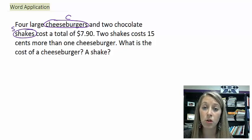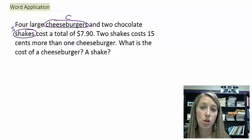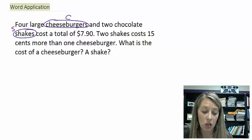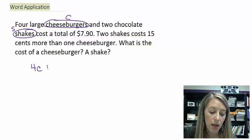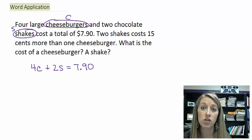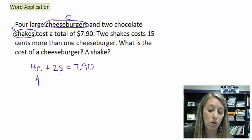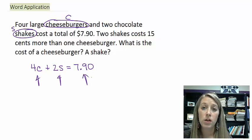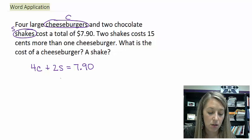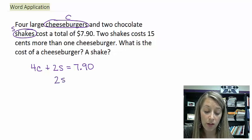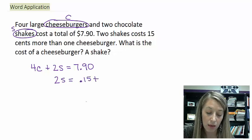Some people's S's might look like 5's, so use something else if you prefer. My first equation is exactly what it says: four cheeseburgers and two shakes cost $7.90, giving us our first equation — that one's pretty straightforward. The second equation is: two shakes cost $0.15 more than one cheeseburger. This one's a bit more difficult because it's not in the standard form we're used to seeing, but we'll set it up as it reads and manipulate it if needed. Two shakes are equivalent to $0.15 more than one cheeseburger.